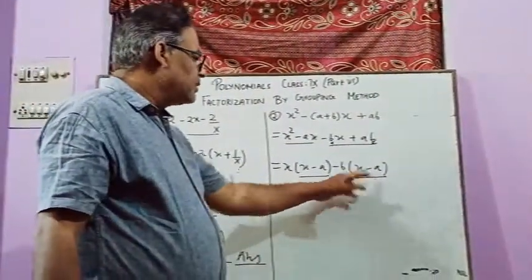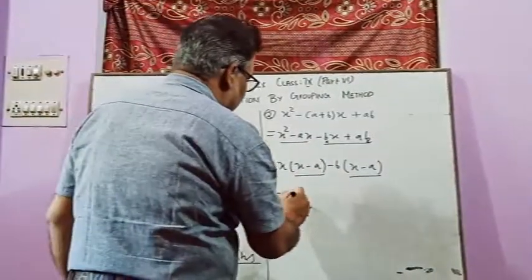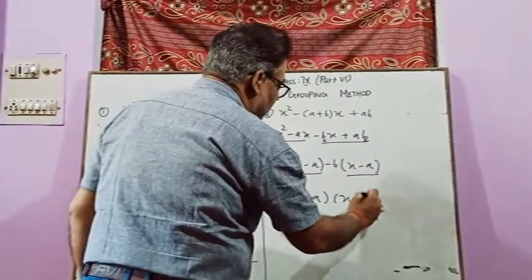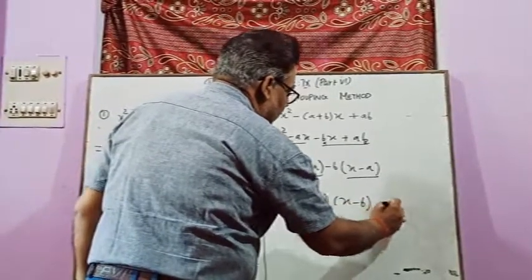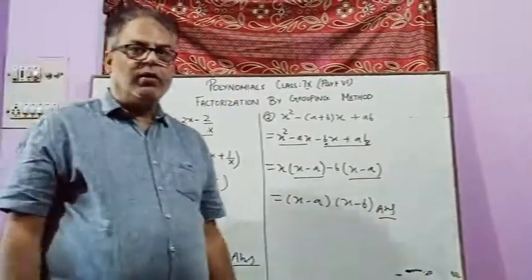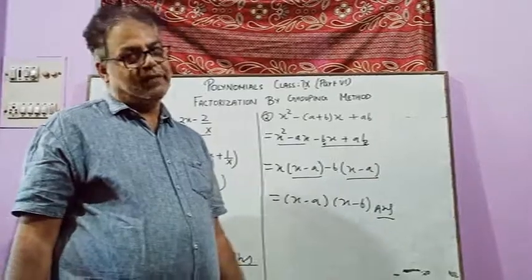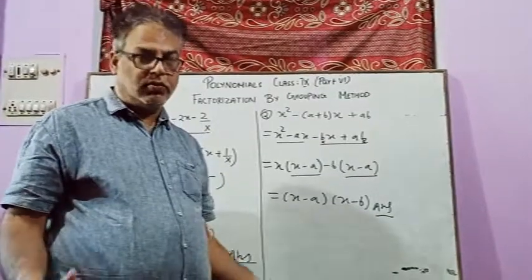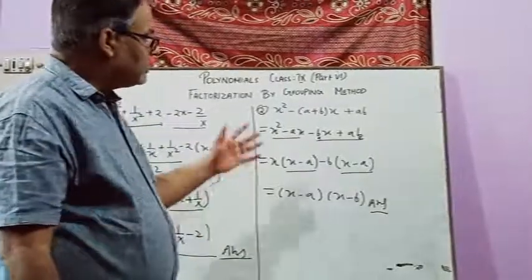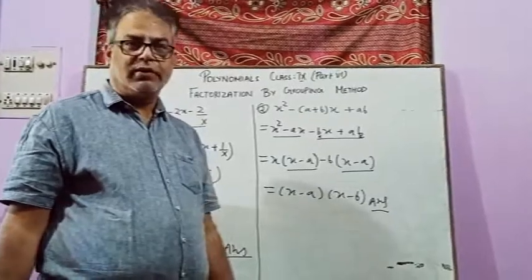If you see this x minus a, x minus a we can take common. So in our next step, if we have x minus a common, then we have x minus b. So we have solved these questions by the grouping method. Depending on these questions, we will give you practice assignments.